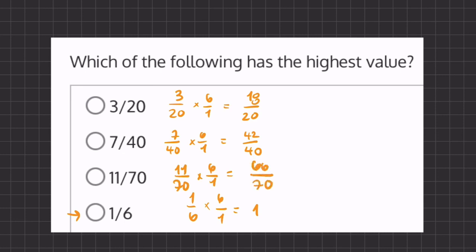Now when we compare all these fractions, the only fraction that is larger than one is going to be 42 over 40, meaning that 7 over 40 will be our highest value.